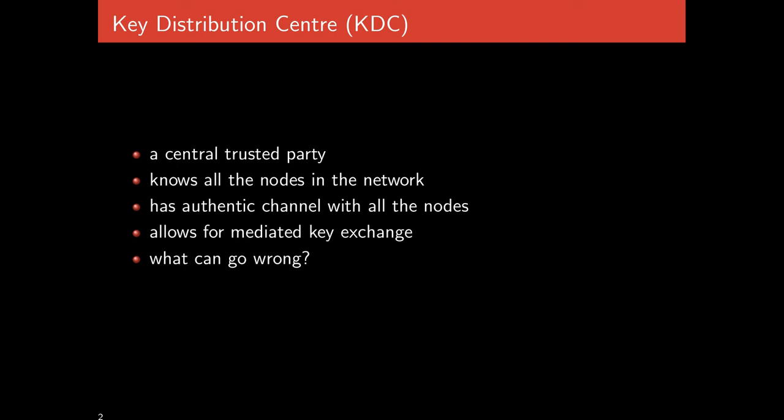The core idea is a Key Distribution Center, a KDC. This is a central trusted party — the KDC knows all of the nodes on the network: all the users, all the printers, anything that might require or provide service. The KDC has an authentic channel with all these nodes. If you imagine it as a graph, you have a hub-and-spoke topology where many users can all directly talk to the KDC, and the KDC can directly talk to all the other services.